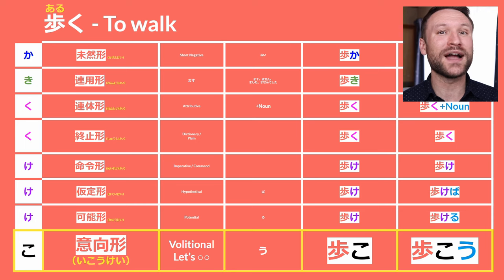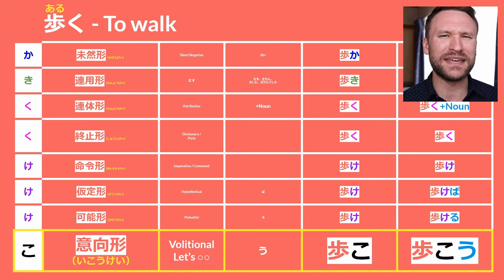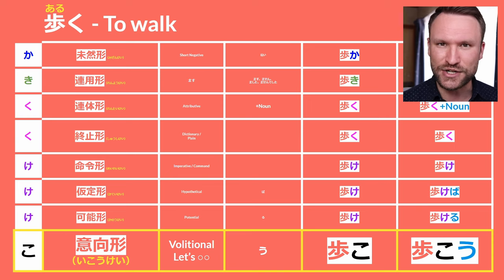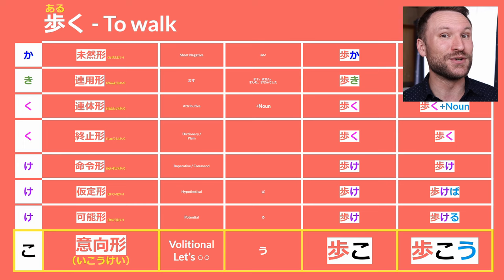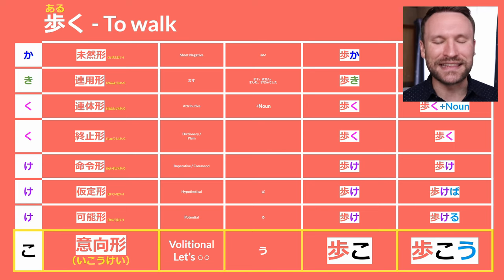Finally, we move down to the O column. Here we find ikoukei, which is also part of the mizenke when native Japanese kids learn it, but it has a separate meaning and ending. Ikoukei is the volitional form — it's like 'let's do something.' To get it, move to the O column and add u: aruko + u = arukou — 'let's walk.'